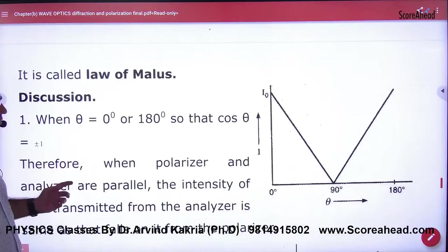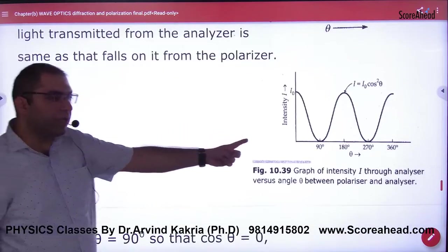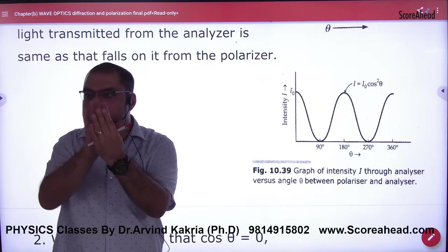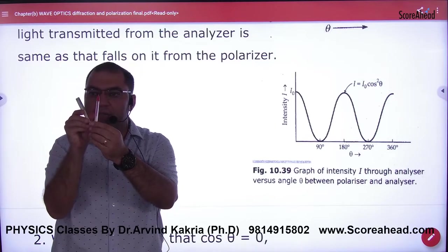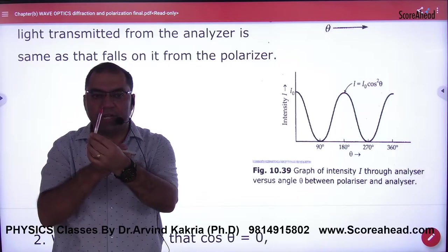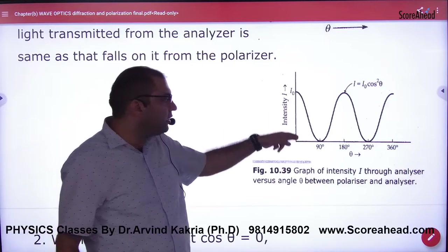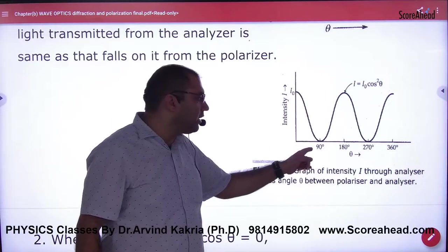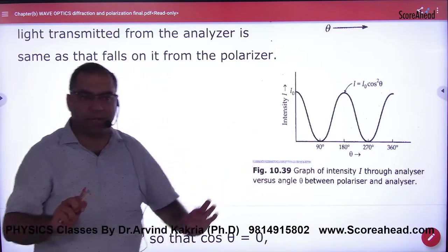In the Law of Malus, rule number one: cross out this diagram in your book. Draw the intensity graph with theta. If you change the polarizer-analyzer angle — from 0, 30, 60, 80, 90, 120, 270, to 360 — you can rotate the analyzer a full 360 degrees. The cos² θ graph shows that at θ = 90°, no light; at θ = 270°, no light; at θ = 180°, maximum light. So this point is clear.